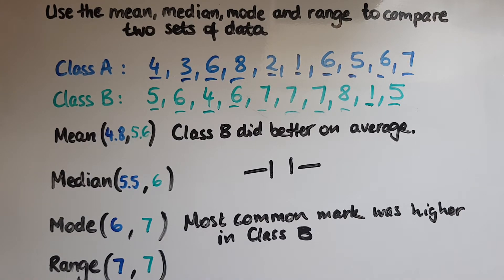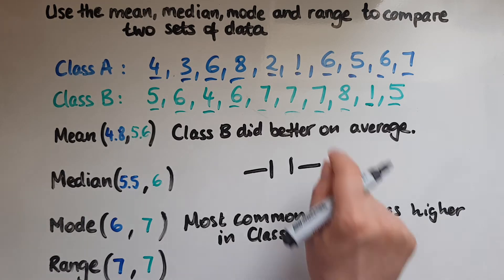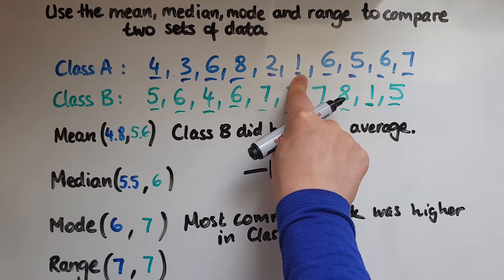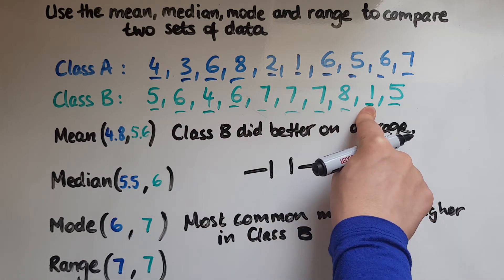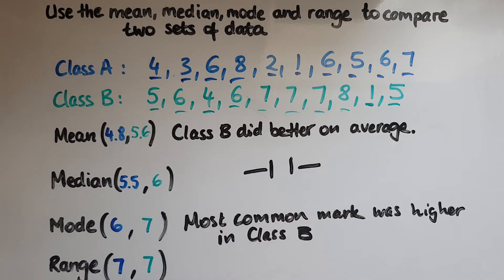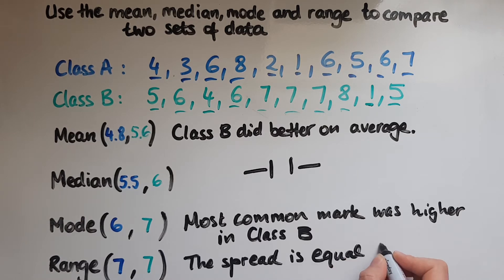In terms of the range, which we know is the difference between the highest and the lowest mark, that measures the spread. How spread out are these marks? As you can see from class A, the lowest mark was 1 and the highest was 8, but that was exactly the same for class B. The lowest mark was 1 and the highest was 8. So the spread is equal for both classes.